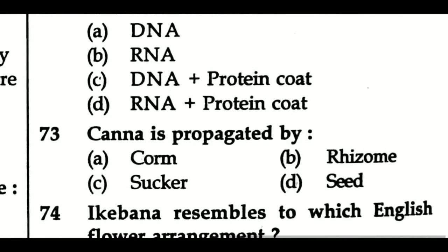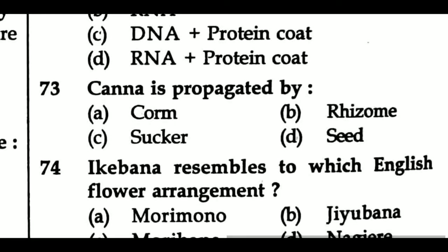Question 73: Canna is propagated by — Option A: corn, Option B: rhizome, Option C: sucker, Option D: seed.